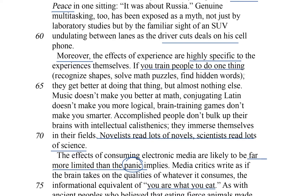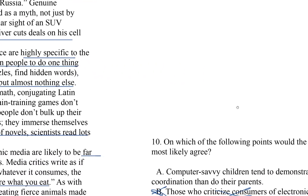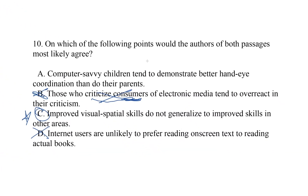If you train people to do one thing, they get better at doing that thing, but almost nothing else. Music doesn't make you better at math. Conjugating Latin doesn't make you more logical. Brain training games don't make you smarter. So if getting good at one thing doesn't make you good at another different thing, then we can surmise quite reasonably that the author of passage two would agree with the idea that improved visual-spatial skills do not generalize to improved skills in other areas. This textual support gives me enough information to infer that both authors would agree with C — and that means we have our answer.